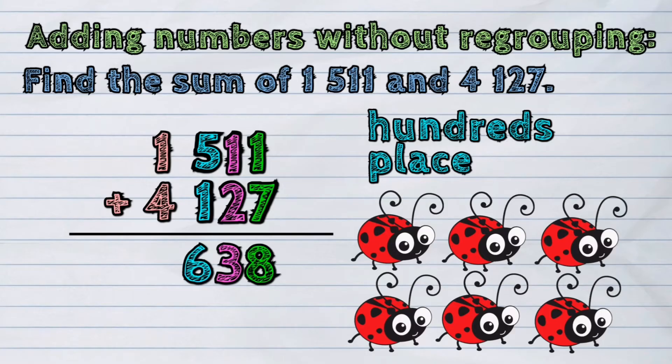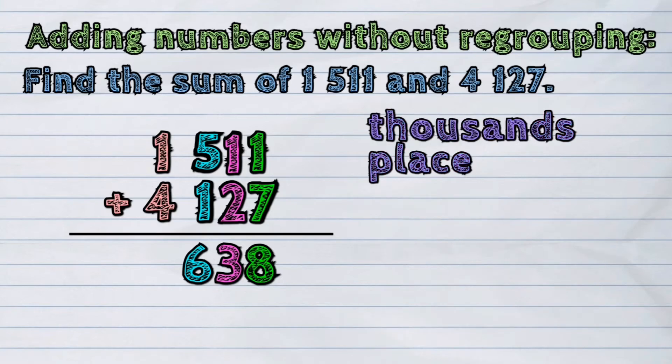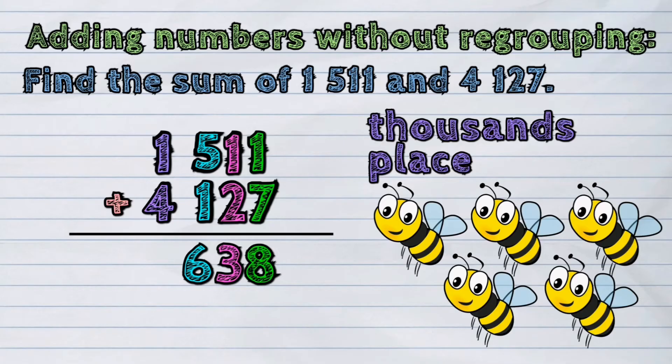Lastly, the digits in the 1000's place. 1 and 4 when added together gives the sum of 5.